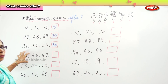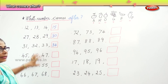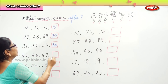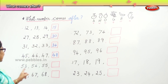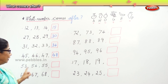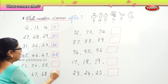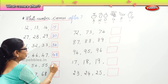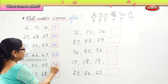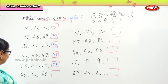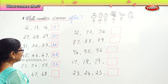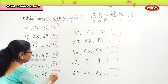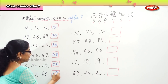What number comes after? Forty-five, forty-six, forty-seven — forty-eight. What number comes after? Fifty-three, fifty-four, fifty-five — you get fifty-six. What number comes after? Sixty-six, sixty-seven, sixty-eight — sixty-nine.